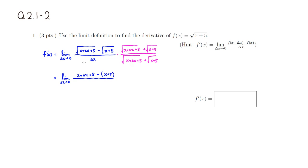And in the denominator, we can't really do much, so I'm going to write it down: Δx times [square root of x + Δx + 5 plus square root of x + 5].